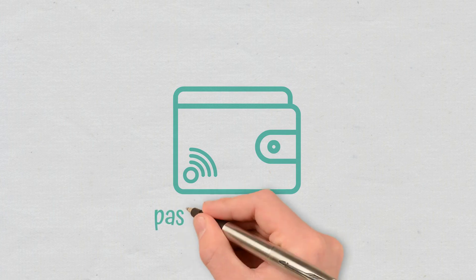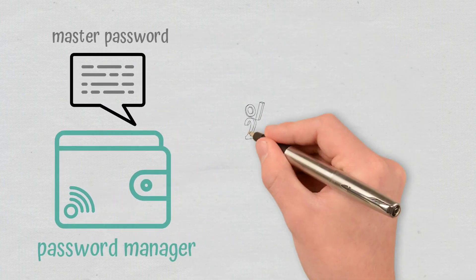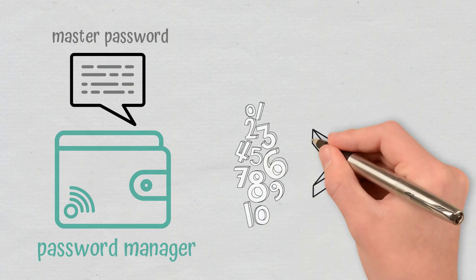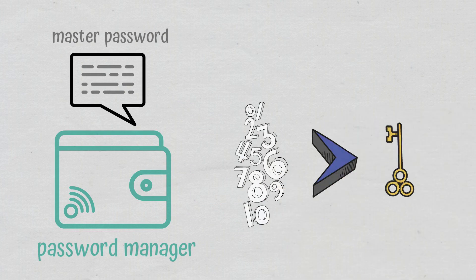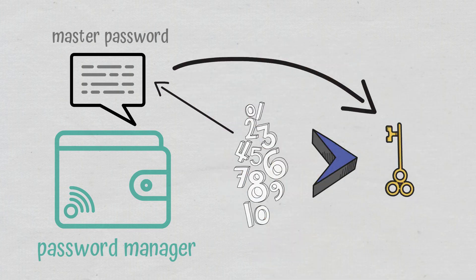We could say that a crypto wallet is a password manager, and the seed phrase is a master password. Since private keys are algorithmically derived from the long string of numbers represented by seed phrase, this phrase will help you access all the private keys and crypto funds in your wallet.